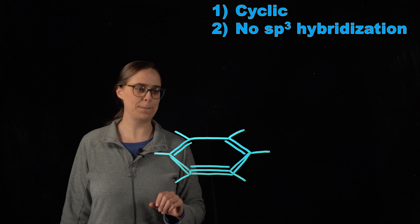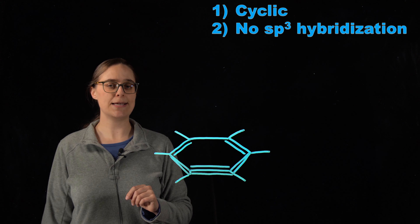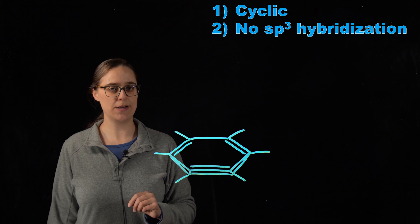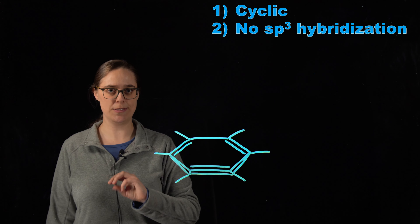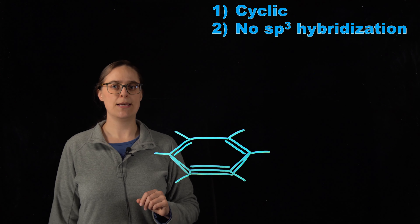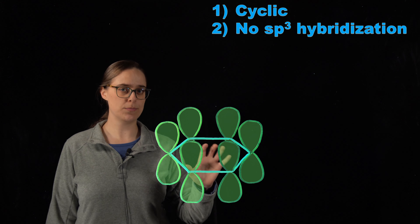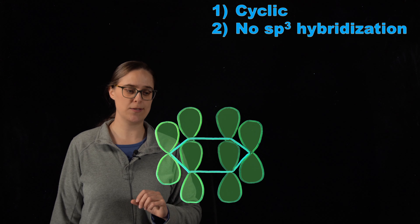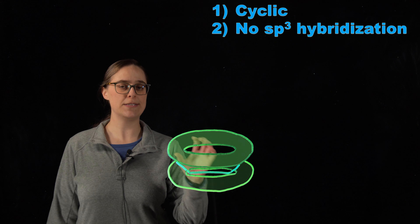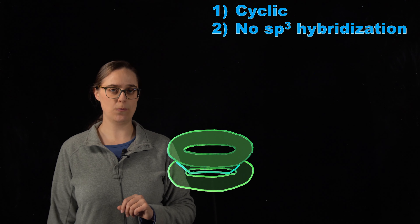Let's look at benzene. Each and every carbon in benzene is sp2 hybridized — each carbon is bonded to three other atoms: two carbons and a hydrogen. So each and every one of these carbons has a p orbital that is perpendicular to the plane of the molecule. This is uninterrupted, meaning every single one of these can overlap. This is what we want.